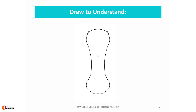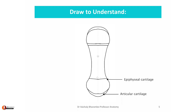Cover up the ends of the long bone with the help of articular cartilage on both sides. Draw the epiphyseal cartilage clearly, and now draw the compact bone. With this we have some basic parts of the bone. Let us color up these parts quickly.